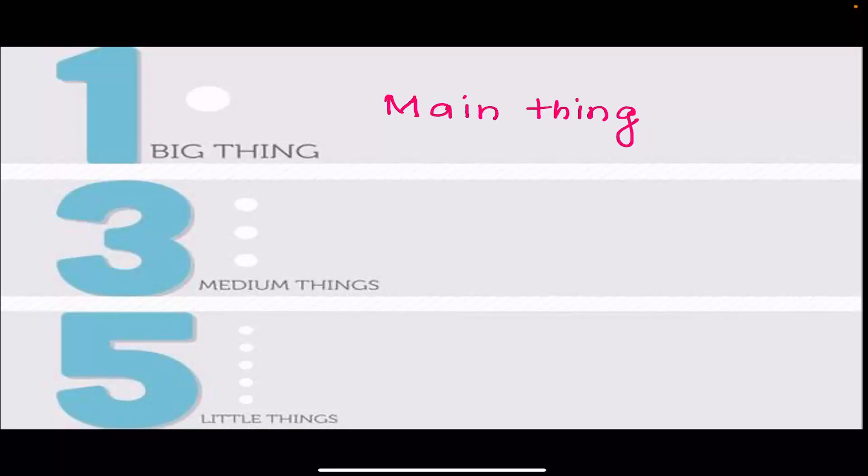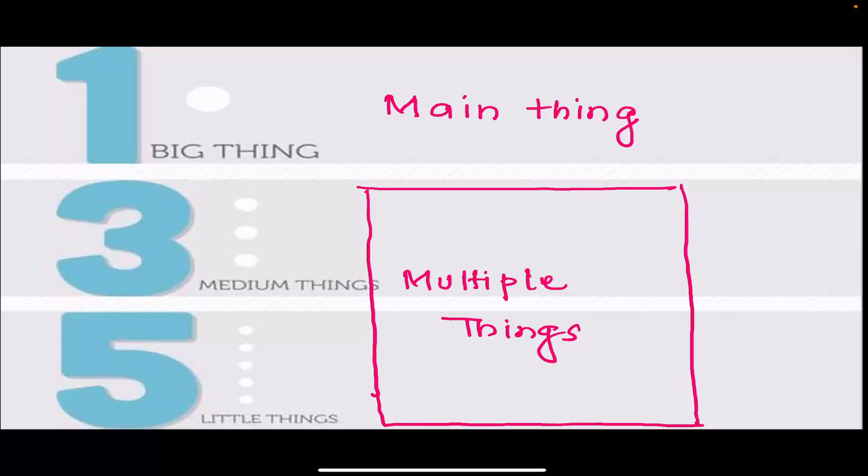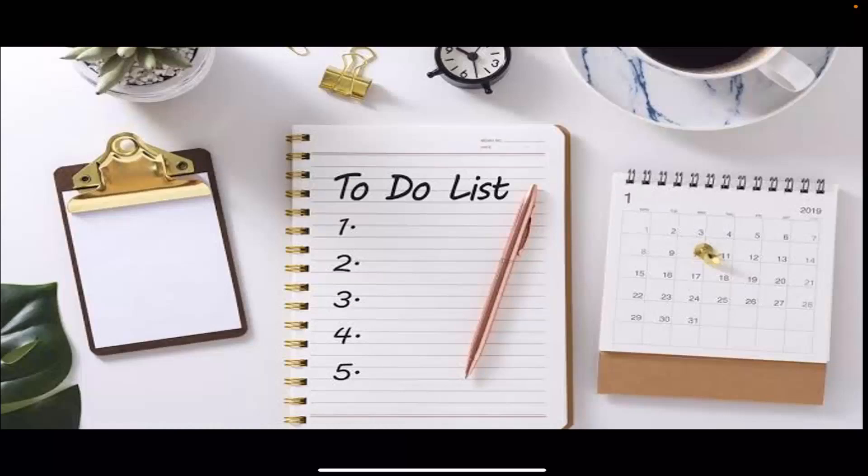आप अपने multiple things को भी quantify कर सकते हैं, उसमें three medium things और five little things के रूप में categorize कर सकते हैं। पर मैं to-do list के ऊपर एक और भी detailed video लेकर के आऊंगा। इसके अलावा भी यह मेरा suggestion है कि आप अपने जो complex issues हैं, उसको आप comment box में लिख सकते हैं, जिससे कि मैं आपको कुछ practical solution दे सकूँ। Thank you.